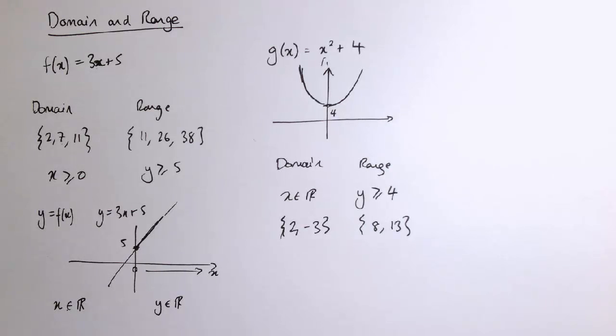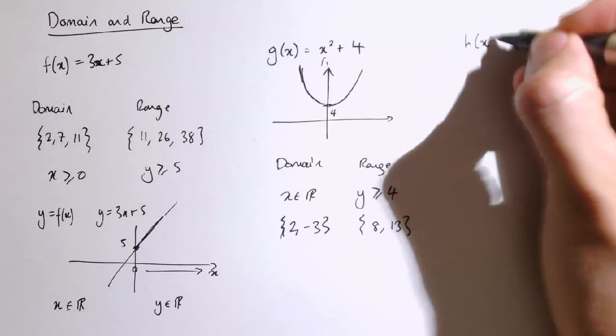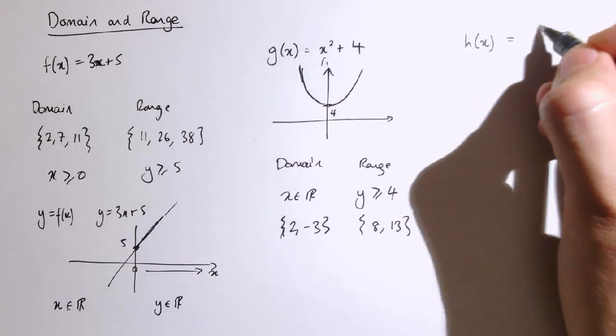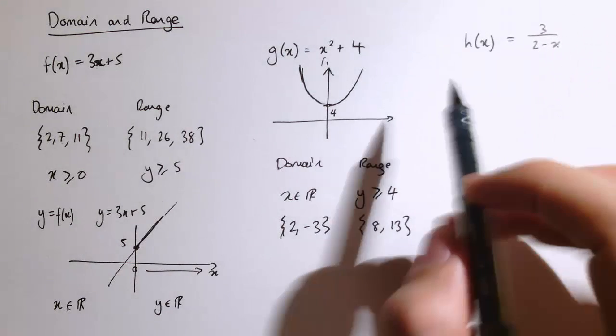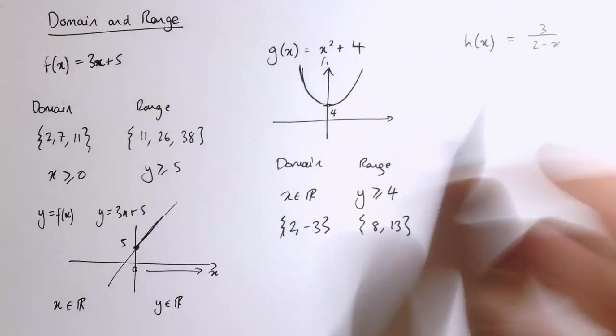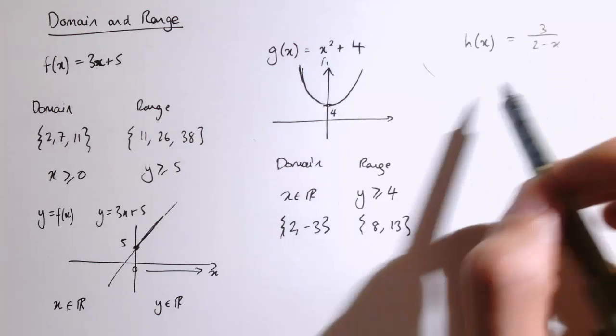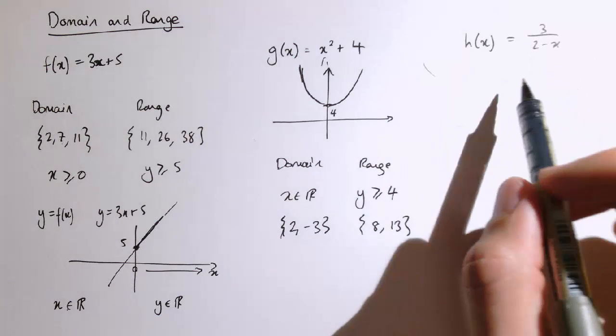One other situation to look out for: if we've got a function, let's say h(x) = 3/(2 - x), we could give you some inputs and outputs, think about what the graph looks like. But the reason I give you a function like this is to notice that sometimes there are values that aren't allowable for the domain.